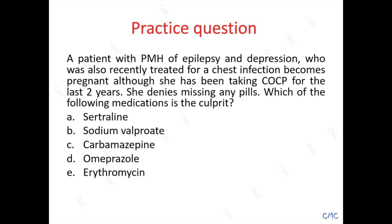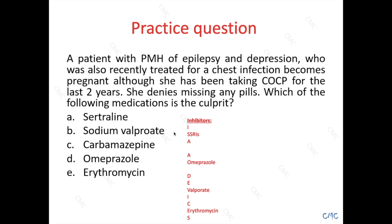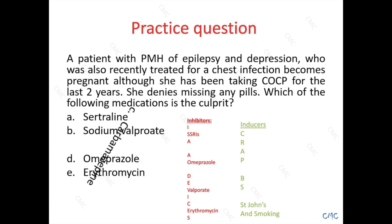Looking at the bank family members — all the other options are actually inhibitors. Sertraline is a selective serotonin reuptake inhibitor, valproate is on the list, omeprazole is on the list, and erythromycin as well. Whereas carbamazepine, hiding in the middle, is revealed to be a crap family member, therefore solving the mystery of the not-so-effective combined oral contraceptive pill, and hence the pregnancy.